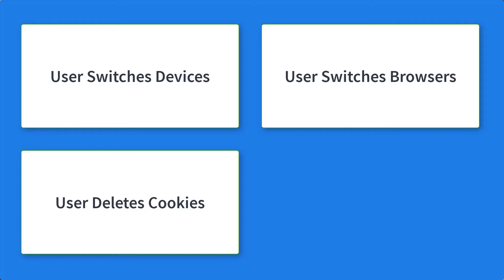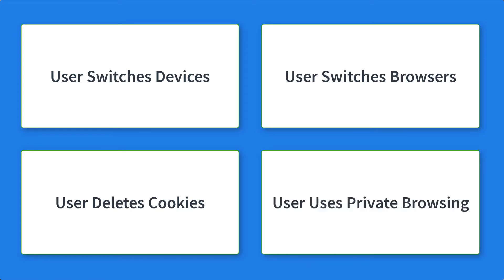The next is if a user deletes cookies. This tracking relies on cookies, so if people delete their cookies, the next visit would count as a new user even if they had visited before deleting the cookies. And lastly, if the user uses private browsing or incognito mode, then no cookie is set, and each visit counts as a new visitor.